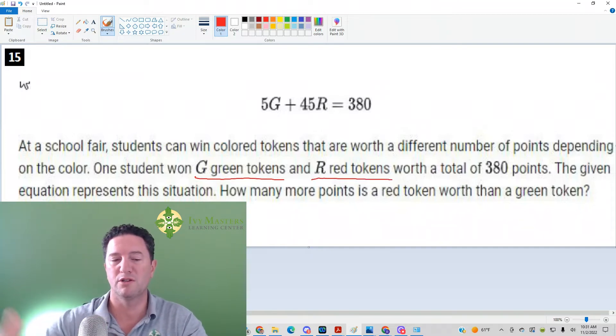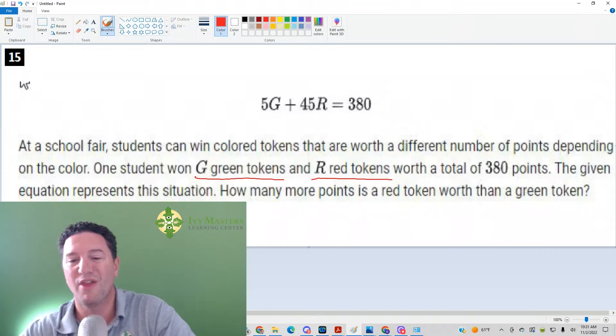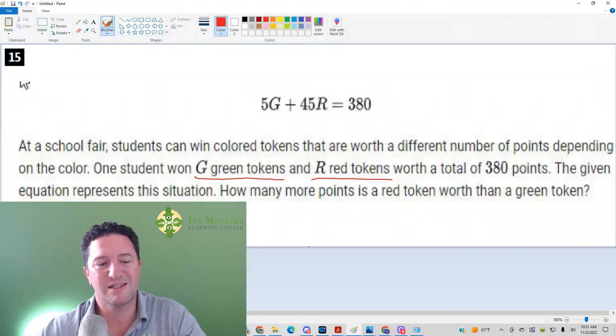that's how it reads. Worth a total of 380 points, the given equation represents this situation. How many more points is a red token worth than a green token?